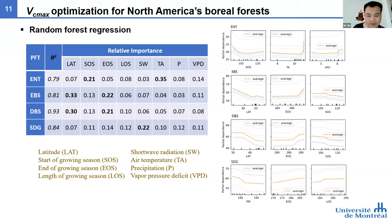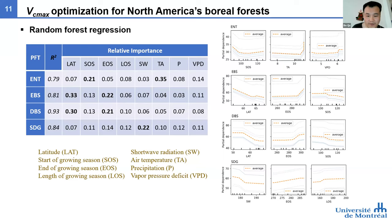The random forest regression suggests that latitude is important for shrub and herb plant function types in explaining the variation of VCMAX. Air temperature is important for needle-leaf trees. The site-level variation provides a basis to run the model at regional simulation scale.